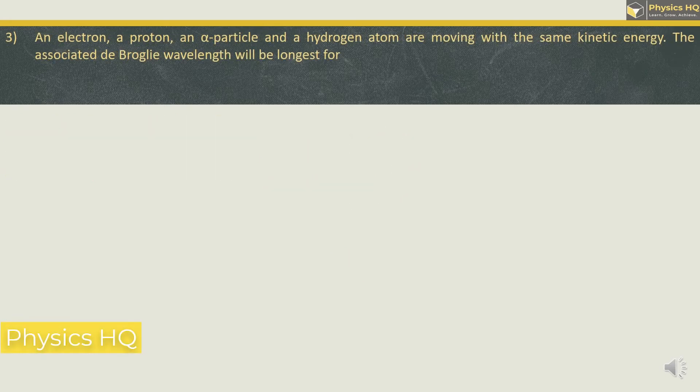An electron, proton, alpha particle, and a hydrogen atom are moving with the same kinetic energy. The associated de Broglie wavelength will be longest for electron, proton, alpha particle, or hydrogen atom.